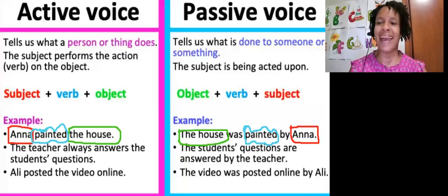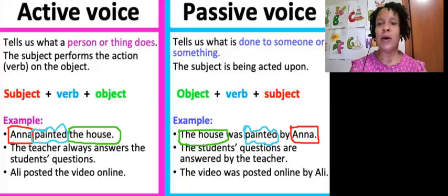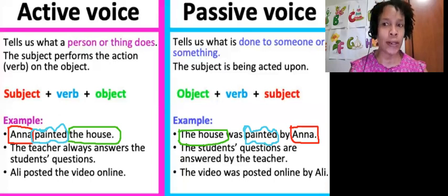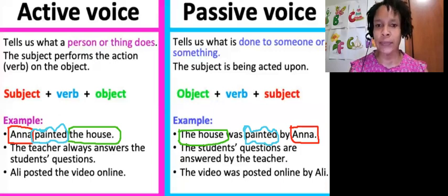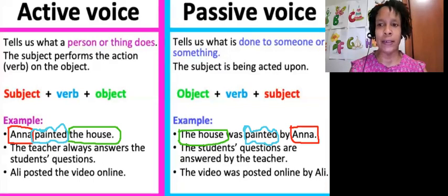Now let's look at passive voice. Passive voice tells us what is done to someone or something. The subject is being acted upon. We have object plus verb plus subject.